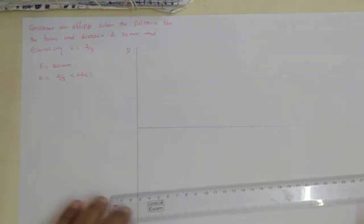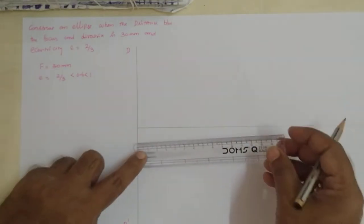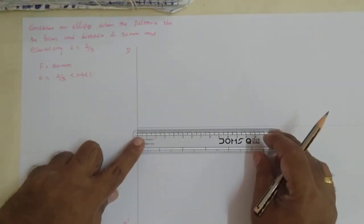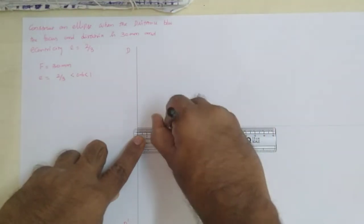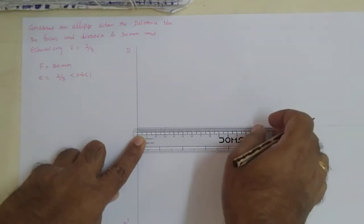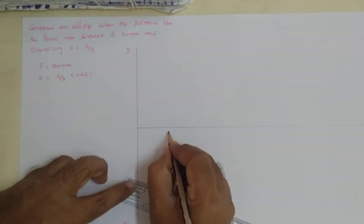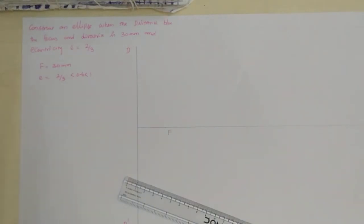From the directrix, we are going to draw the horizontal line, which is called the x-axis line, perpendicular to the directrix line. Then I am going to mark the focus point. The focus point value is given in the problem as 30 from the directrix, so I keep the scale here and mark 30.